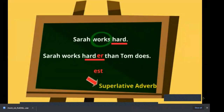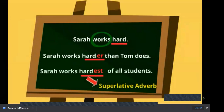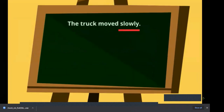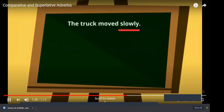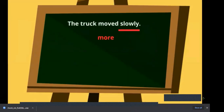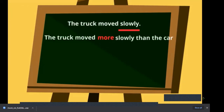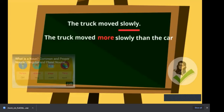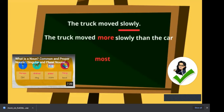To compare three or more actions we add '-est' to the adverb — this is the superlative adverb: 'Sarah works hardest of all students.' Most adverbs that end in '-ly,' we use the word 'more' to compare two actions. If the adverb is 'slowly' — the truck moved slowly — we don't add '-er'; instead: 'the truck moved more slowly than the car.' For three or more, we use 'most': 'the truck moved most slowly of all.'